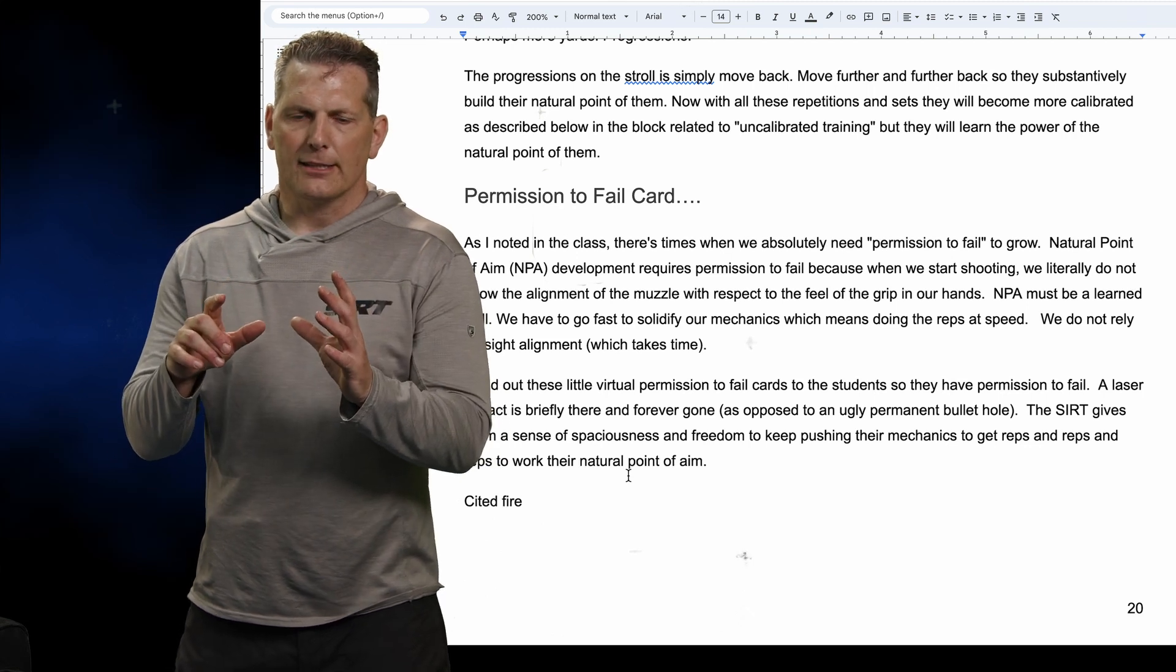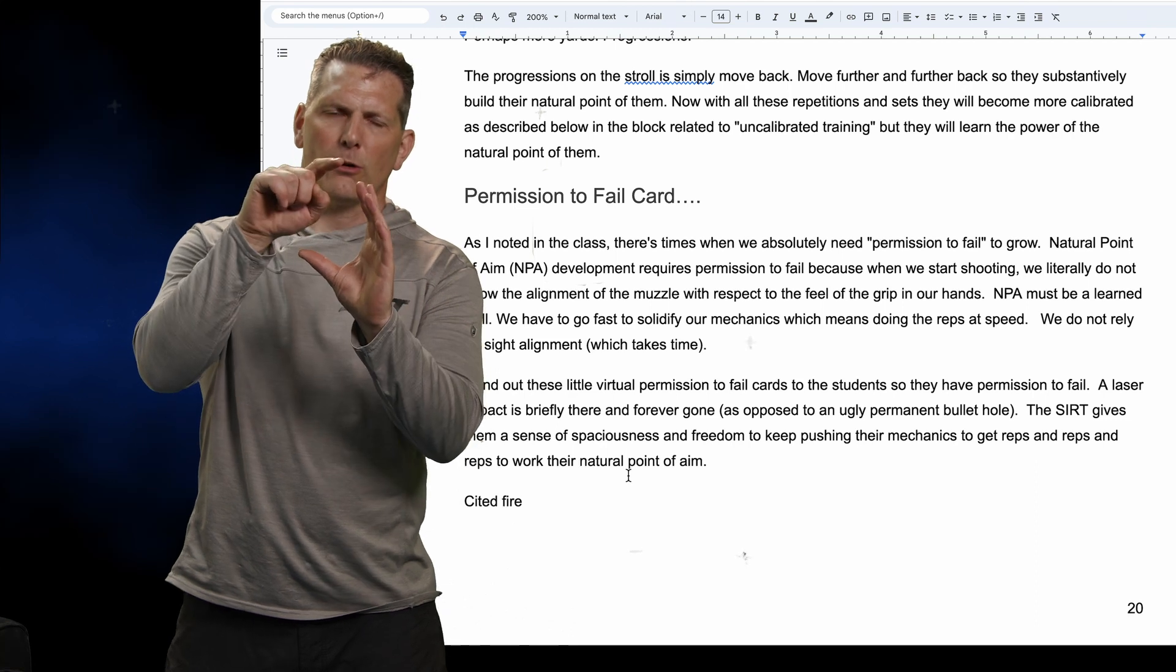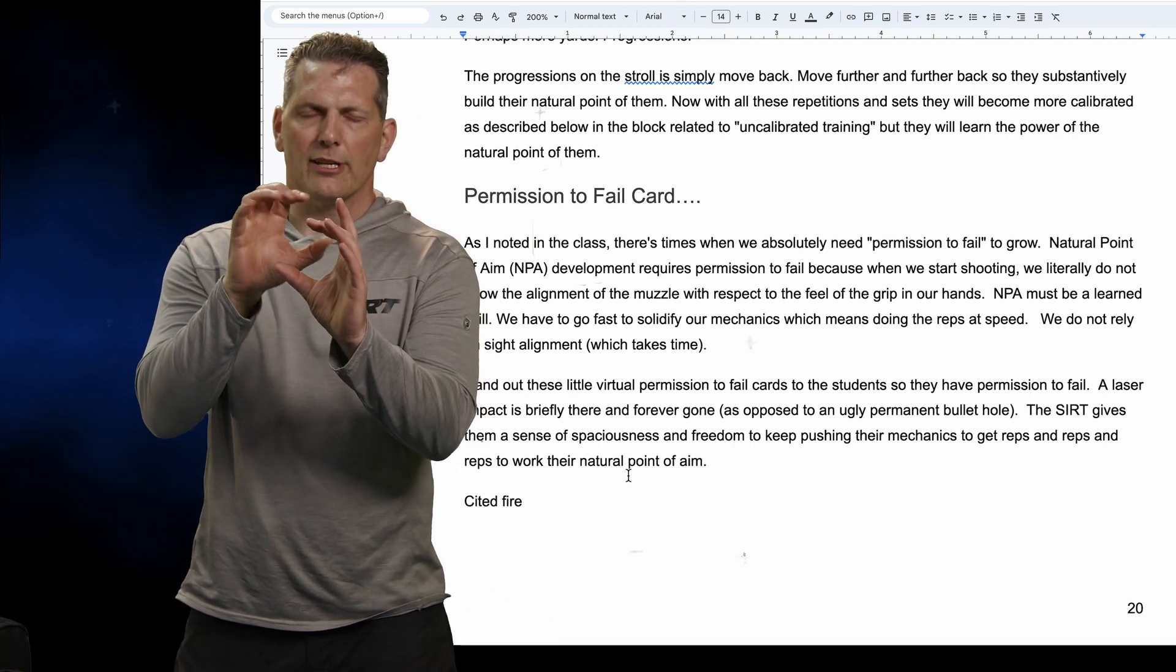A closed loop system is where you take information, you make adjustments, and then you take in more information, make an adjustment until you get it dialed in.